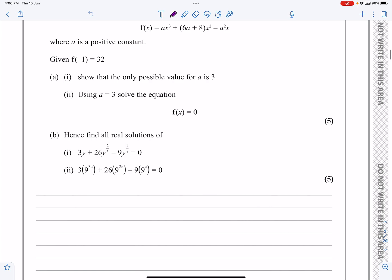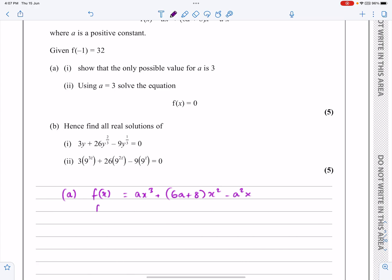So it says part a, f(x) is equal to ax³ plus (6a + 8)x² minus a²x. And then it tells me that f(-1) is equal to 32. So if f(-1) is equal to 32, f(-1) is a, and then putting minus 1 in. So minus 1 cubed, 6a plus 8 times minus 1 squared, minus a² times minus 1. That is all equal to 32.